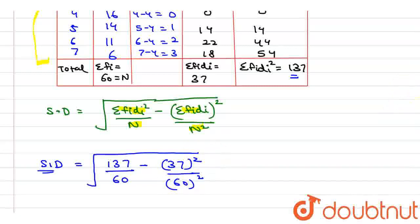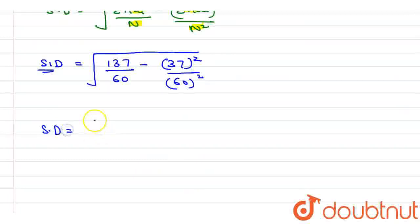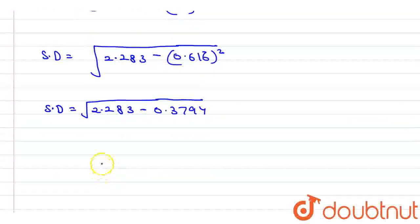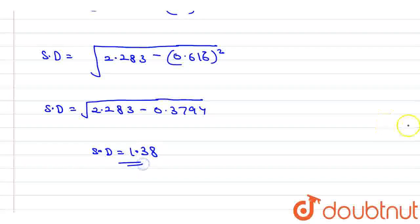So from here we can write as standard deviation equals under root 2.283 minus 0.616 whole square. From here standard deviation equals under root 2.283 minus 0.3794. So standard deviation equals 1.38.